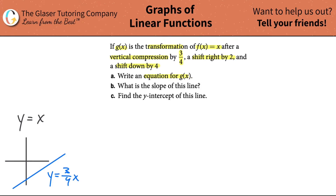And notice the y-intercept before was directly through the origin. Now it has a y-intercept down here somewhere — some negative y-intercept. What is that? Well, I don't really know. That's what we're going to try to figure out. This is really the new line I'm looking for — the equation.